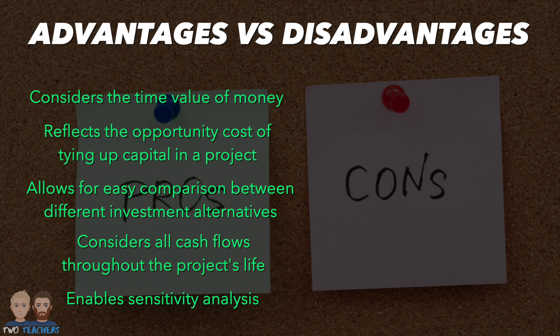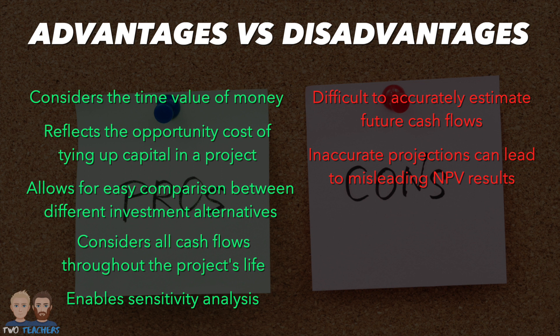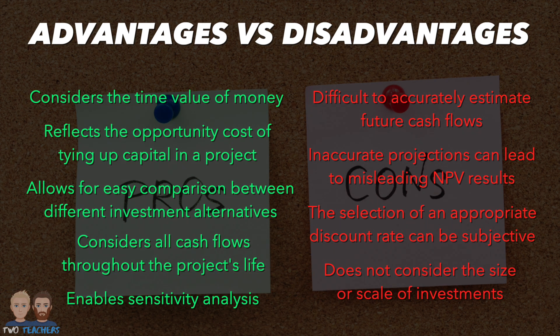Whilst net present value is a widely used investment appraisal tool, it does have limitations. One key limitation is the challenge of accurately estimating future cash flows, which may involve uncertainty and assumptions — and inaccurate projections can lead to misleading results. The selection of an appropriate discount rate can also be subjective, depending on the project's risk, cost of capital, and required rate of return; an incorrectly chosen rate can significantly distort the NPV and lead to flawed investment decisions. Finally, NPV does not consider the size or scale of investments, making it difficult to compare projects of different magnitudes.